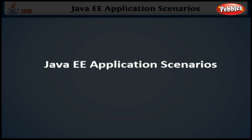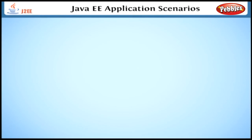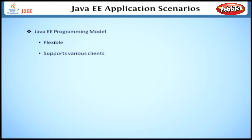In this lesson, we will look at the different application scenarios in Java EE application development. We can use the Java EE programming model for all enterprise applications because it is flexible and also supports a variety of client types with both the web container and EJB container as an optional one.